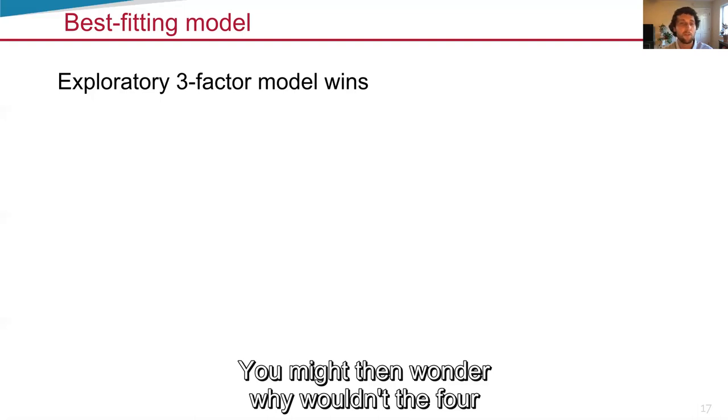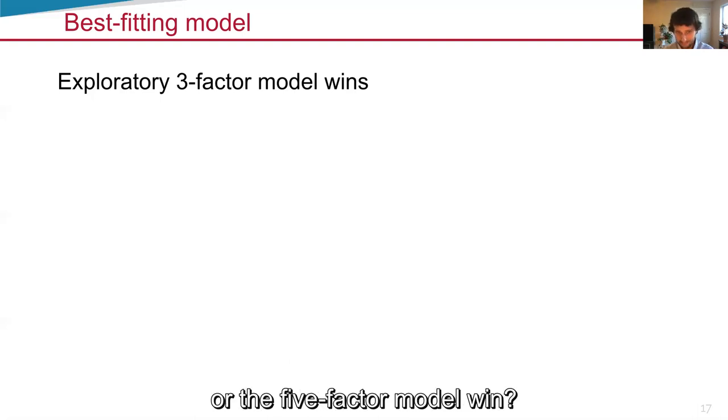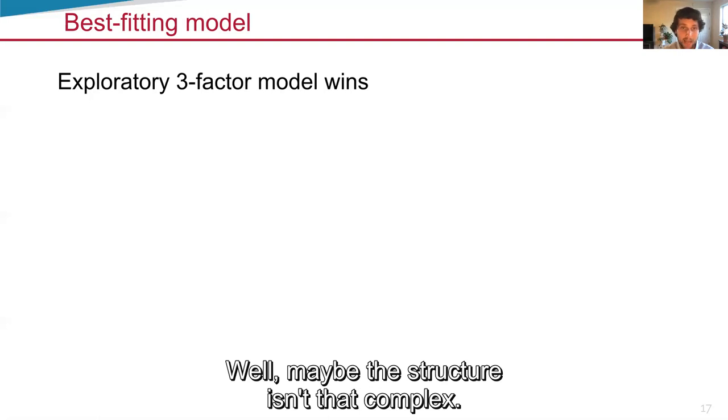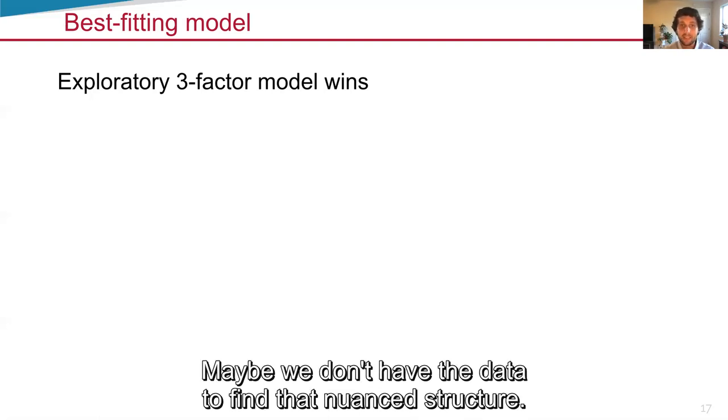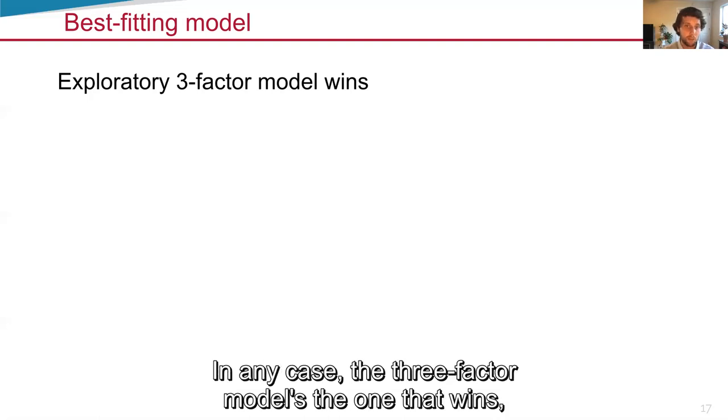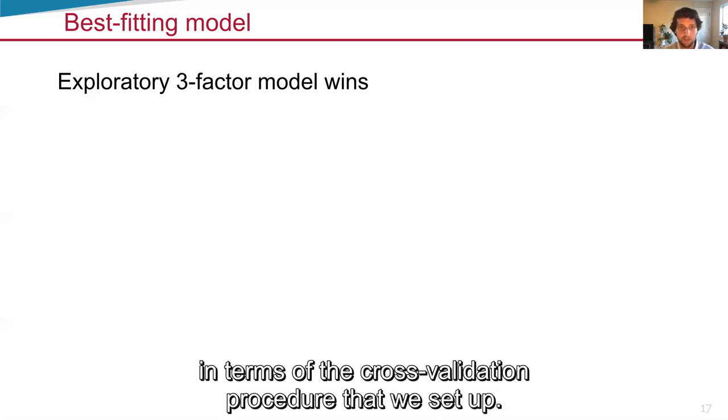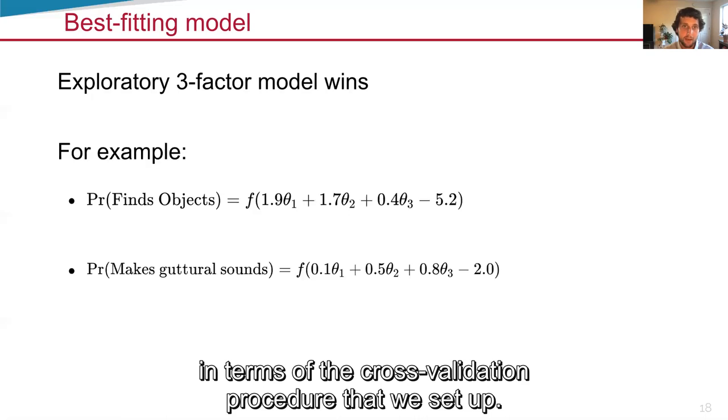You might then wonder why wouldn't the four or the five-factor model win? Well, maybe the structure isn't that complex. Maybe we don't have the data to find that nuanced structure. In any case, the three-factor model is the one that wins in terms of the cross-validation procedure that we set up.